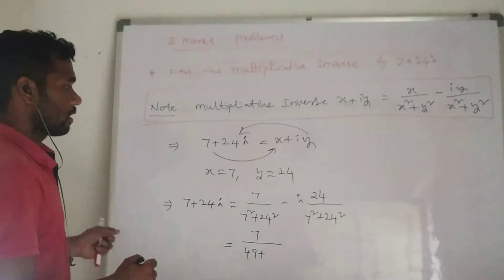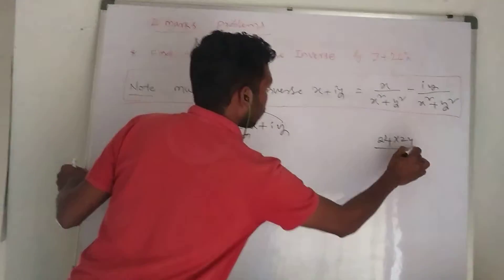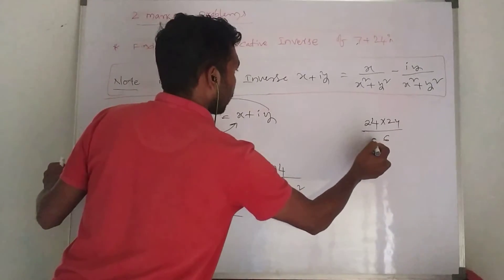...24 squared. 24 squared equals 24 times 24, which is 576.